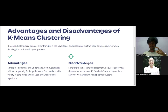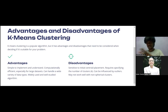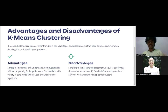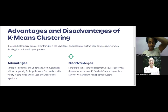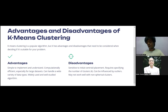Disadvantages: k-means is sensitive to initial centroid placement, requires specifying the number of clusters k, can be influenced by outliers, and may not work well with non-spherical clusters. This last point is a major disadvantage — if the cluster shape is a triangle or rectangle rather than a sphere, k-means will not work. That is why other algorithms like hierarchical clustering, DBSCAN, and t-SNE exist, as they can handle non-spherical clusters.